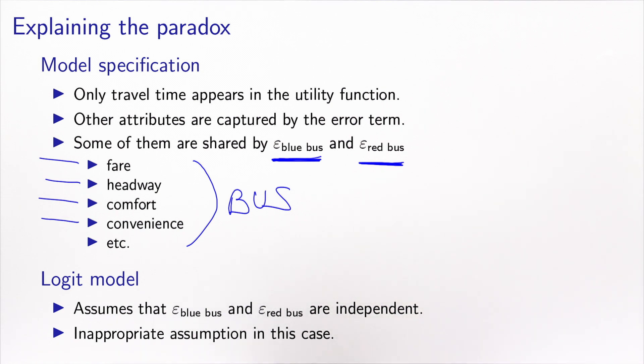But the logit model assumes that the two error terms are independent. And they cannot be independent because they contain common unobserved attributes. Therefore, they are correlated in this example. And the assumption associated with the logit model is not appropriate.